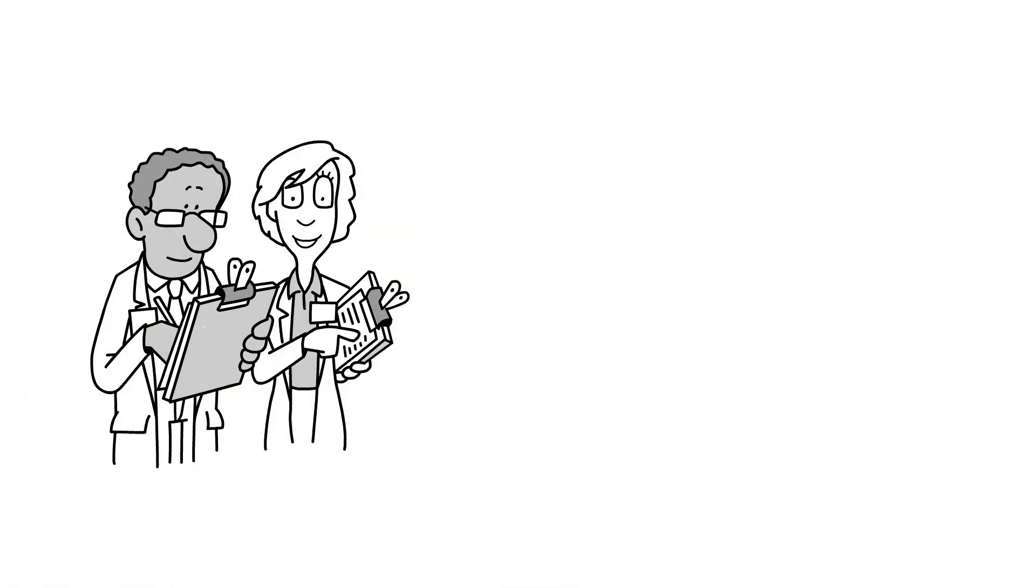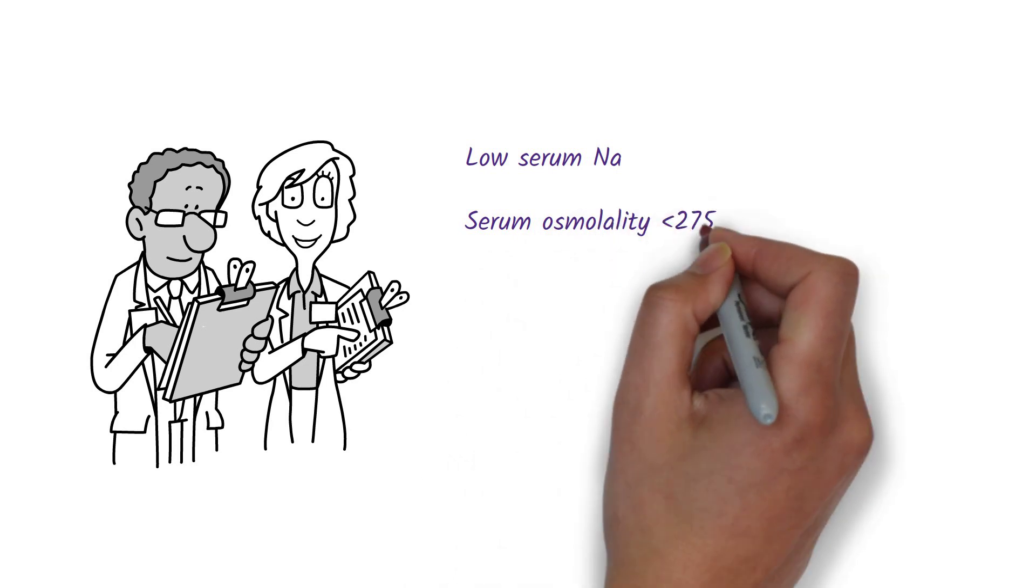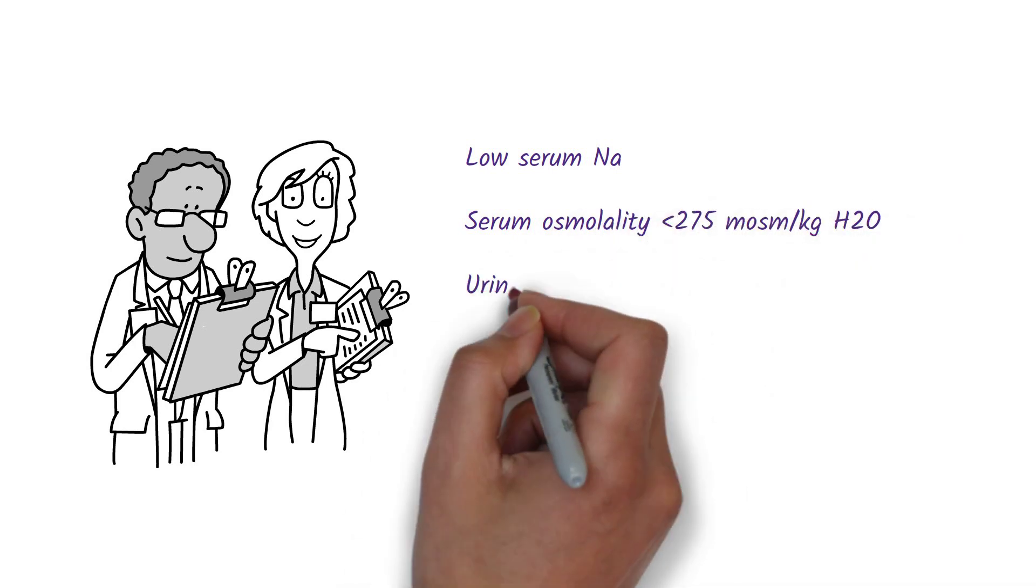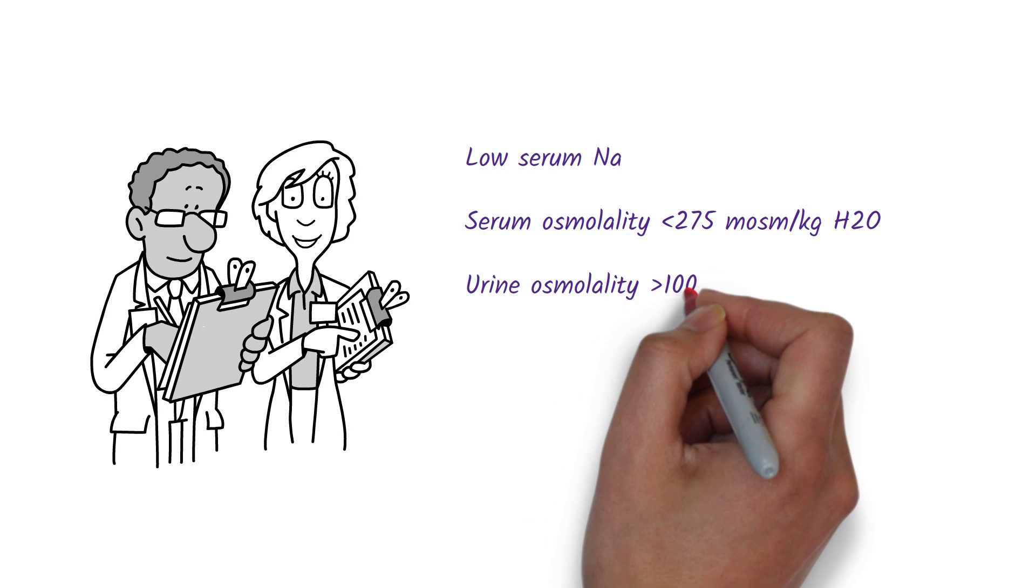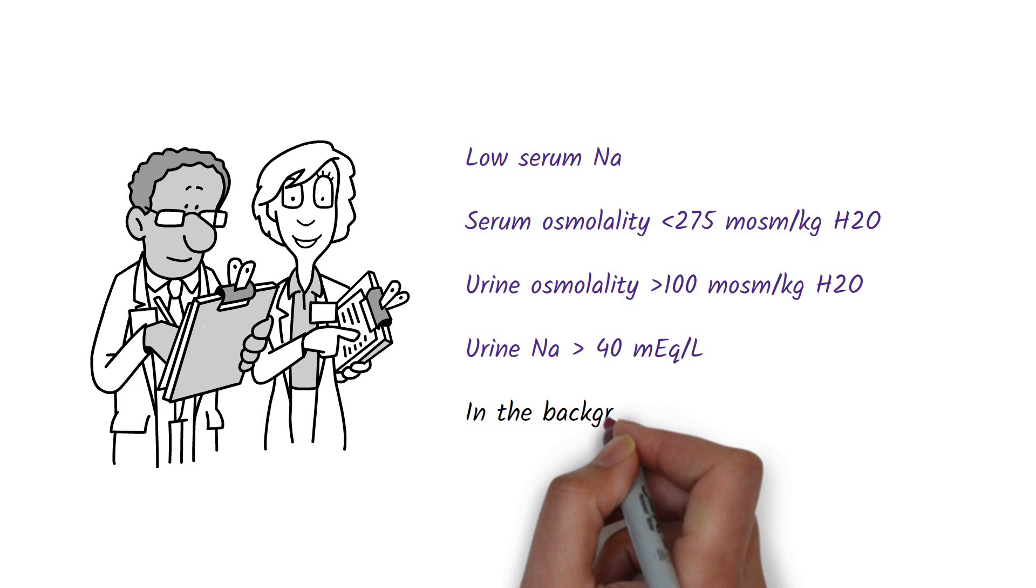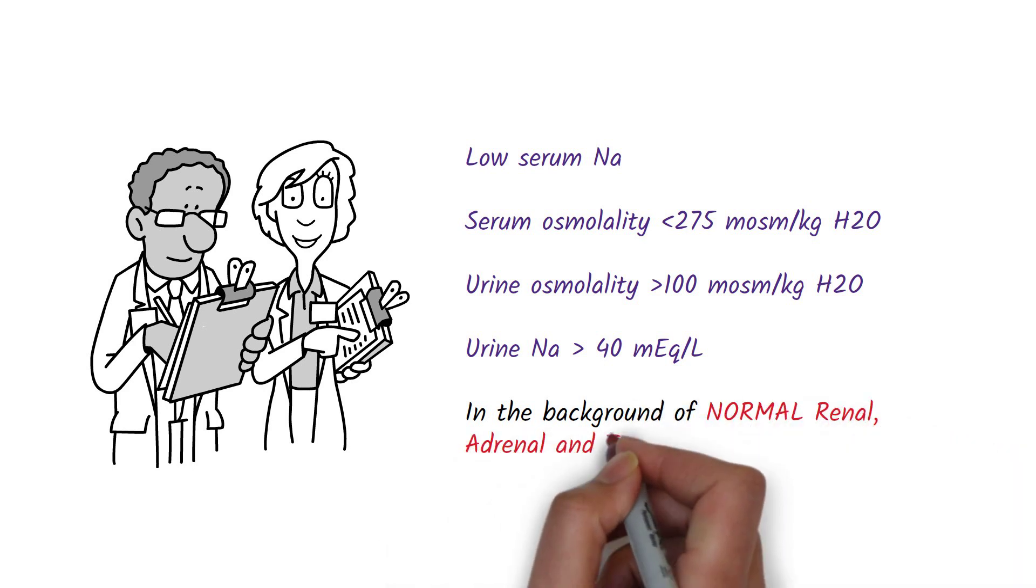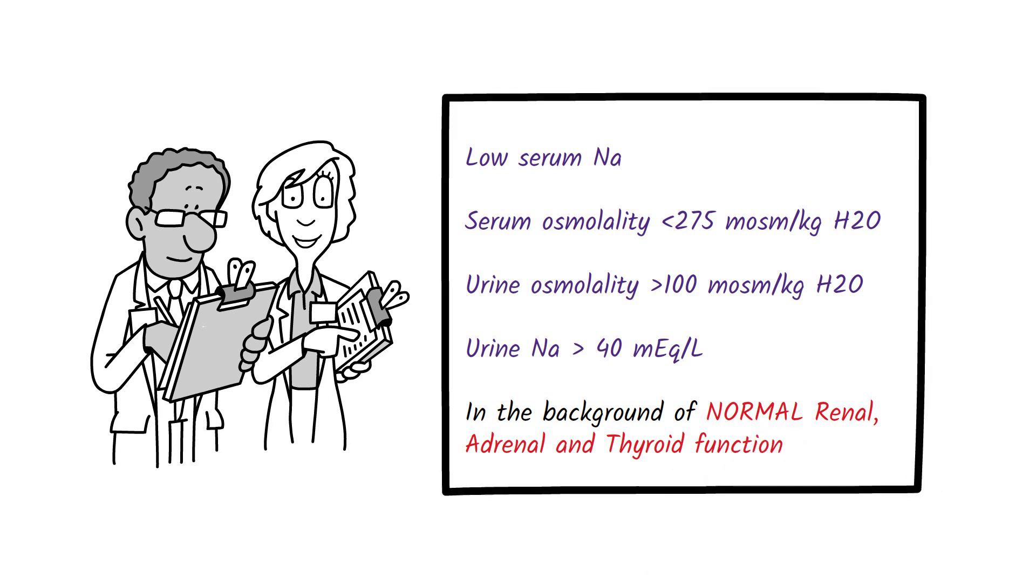SIADH is diagnosed by labs: a low serum sodium level, a serum osmolality of less than 275 mOsm/kg H2O, a urine osmolality of more than 100 mOsm/kg H2O, and a urine sodium of more than 40 mEq/L in the background of normal renal, adrenal, and thyroid function is diagnostic of SIADH.